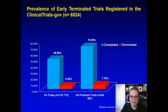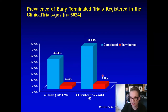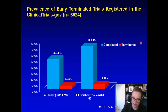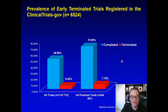On ClinicalTrials.gov, results showed that 7.7% of all completed trials have been prematurely terminated, meaning the original sample size was not achieved. This is important because in the majority of circumstances, a trial that doesn't recruit the original sample size is underpowered to answer the research question.